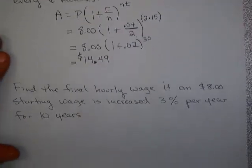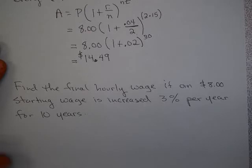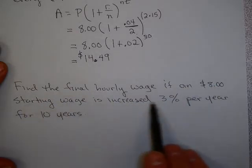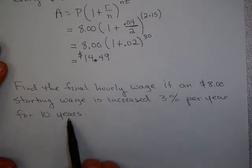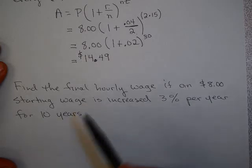Let's see if you can try this problem by yourself and then start the video again when you are done. Okay, here we are to find the final hourly wage if an $8 starting wage is increased 3% per year for 10 years. You notice, unlike the last problem, nothing about half a raise given every 6 months.